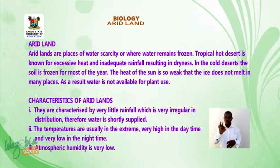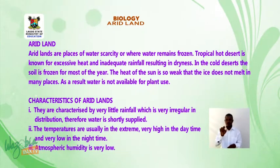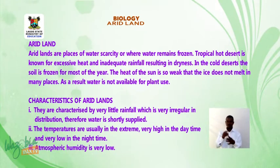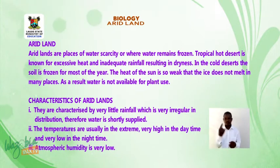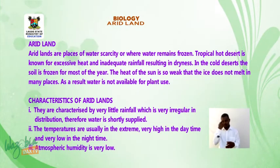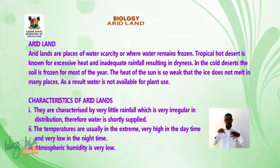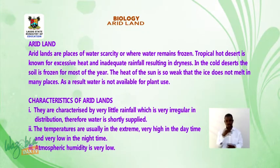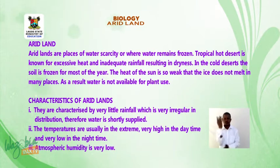Arid lands are places of water scarcity or where water remains frozen. Tropical desert is known for excessive heat and inadequate rainfall resulting in dryness — the place is always extremely hot and there is no water in that environment. In cold deserts, the soil is frozen for most of the year, the heat of the sun is so weak that the ice does not melt in many places, and as a result water is not available for plant use.